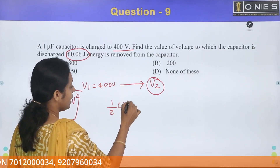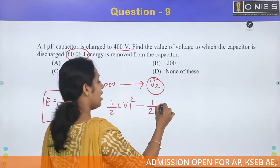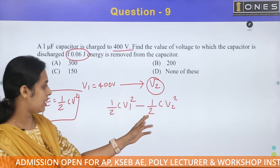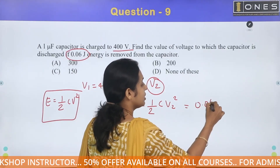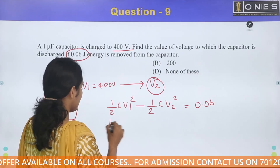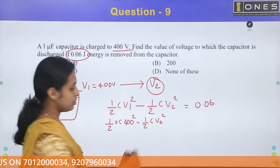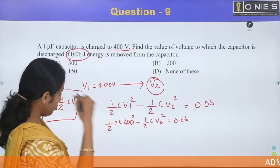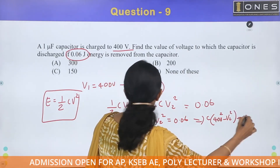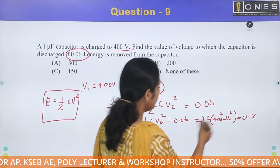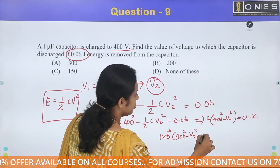The initial energy stored is half C V1 squared, and the final energy after discharge is half C V2 squared. The difference equals 0.06 J. So half C times (V1 squared minus V2 squared) equals 0.06. Multiplying both sides by 2: C times (400 squared minus V2 squared) equals 0.12. Substituting C equals 1 microfarad: 1 times 10 to the minus 6 times (400 squared minus V2 squared) equals 0.12.